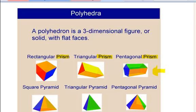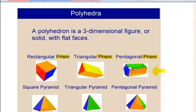The base is the shape that is not the rectangles, so the pentagons are called bases. Bases are connected by rectangles in a prism. The number of rectangles you have is determined by the shape of your base.